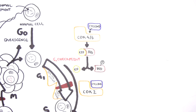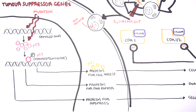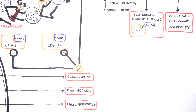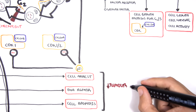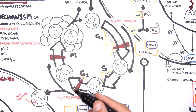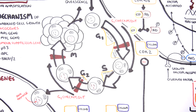When tumor suppressor genes like p53 are inactivated, the cell no longer makes proteins for cell arrest, DNA repair, or apoptosis. As a result, the cell enters the cell cycle, bypasses all checkpoints, and continuously grows and proliferates. I hope this video was helpful — thank you for watching.